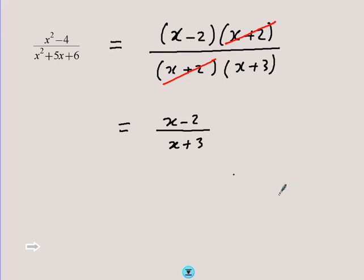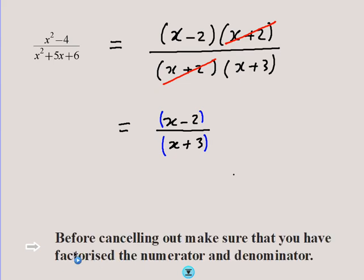Note that the brackets are not necessary anymore because in fractions we have what we call an invisible bracket — it's as if there is a bracket around the numerator and a bracket around the denominator even if you don't write them. So the key idea is: before canceling out, always make sure you have factorized both the numerator and the denominator.